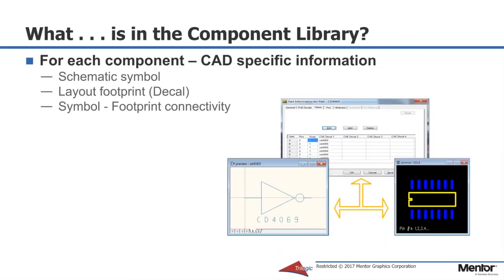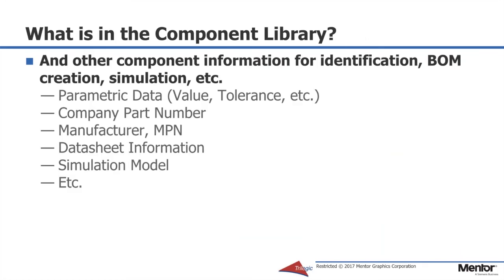First, let's go over some terms. In discussing what is in a component library, we will divide it into CAD-specific information and component information. CAD-specific information, for example, is a schematic symbol, a layout footprint, and the connectivity between them — in other words, how do the pins on the symbol connect to the pins on the actual footprint? Then there is component information: this is the parametric data, the value tolerance, voltage or power, etc., for each unique component. Very often you'll have a company part number which acts as a reference. There also may be the manufacturer and the manufacturer part number information and possibly a link to a datasheet. This aids in the creation of a correct bill of materials. You can also have a reference to a simulation model.